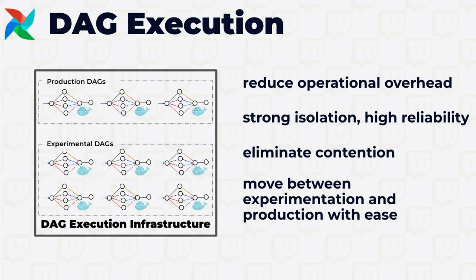Now let's take a look at DAG execution experience. Similar to the DAG authoring experience where we want to lower cognitive overhead for data scientists, here we'd like to reduce the operational overhead for maintaining our infrastructure. We also wanted to provide very strong isolation guarantees so that other jobs do not impact the execution behavior of any given job, and ensure jobs are able to run to completion with as little contention as possible. We also want to ensure that promoting a DAG from experimental to production is very easy and doesn't require additional engineering effort to productionize promising models.